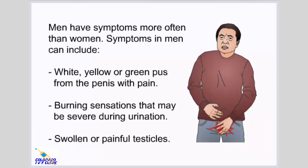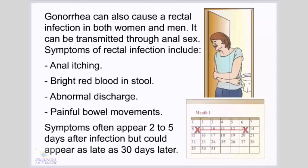Men have symptoms more often than women. Symptoms in men can include white, yellow, or green pus from the penis with pain, burning sensations that may be severe during urination, and swollen or painful testicles. Gonorrhea can also cause a rectal infection in both women and men, transmitted through anal sex. Symptoms of rectal infection include anal itching, bright red blood in stool, abnormal discharge, and painful bowel movements, appearing 2 to 5 days after infection but possibly as late as 30 days later.